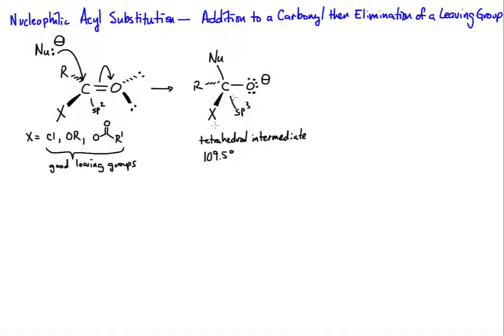So we have a good leaving group in terms of X. The first step was the addition. The next part of this mechanism is the elimination. So the lone pair on oxygen is driving the arrow to reform the pi bond. This leaving group is then leaving with the electron pair that's in that sigma bond. So the central carbon is now being rehybridized back to sp2.